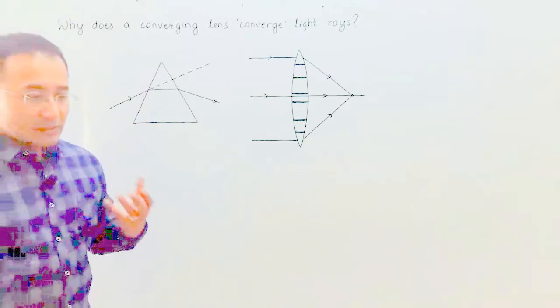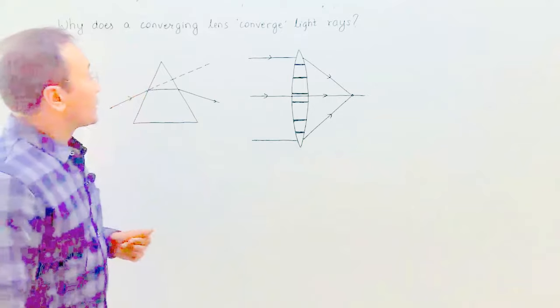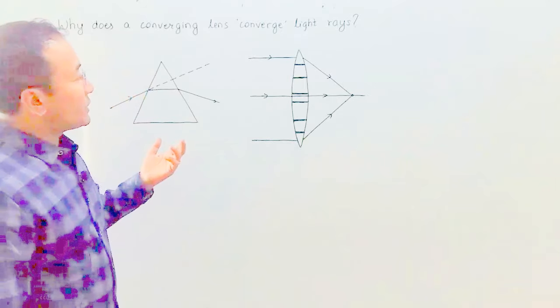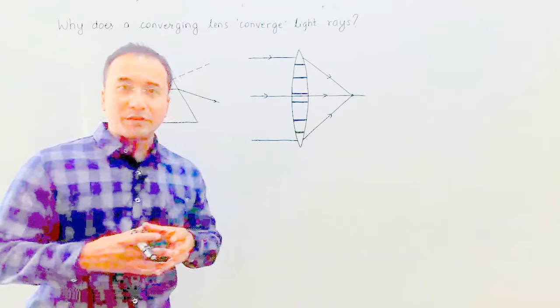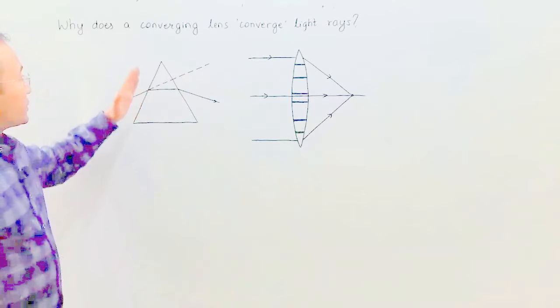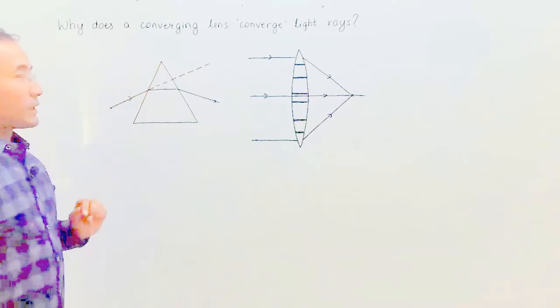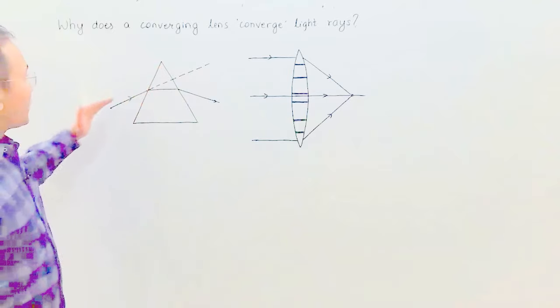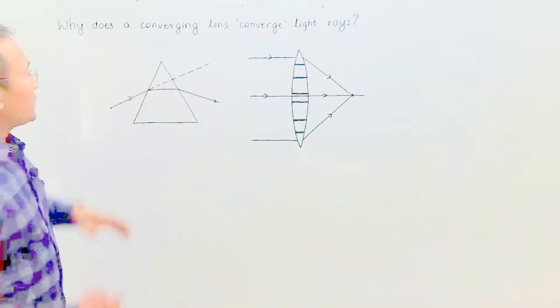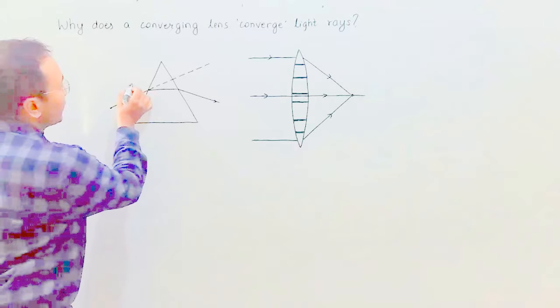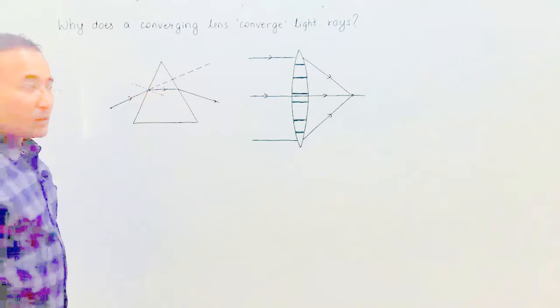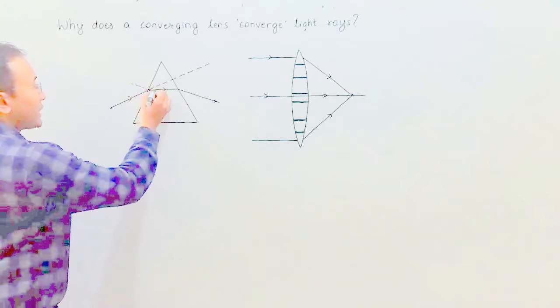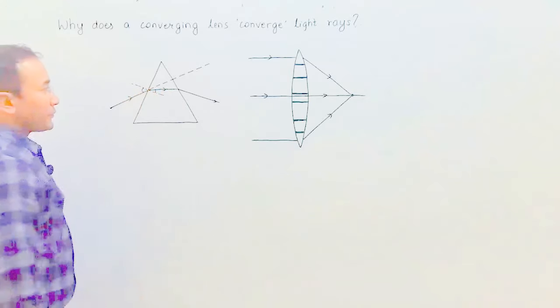That is the issue we have today. Before understanding the converging lens, we have to understand the action of a prism. A prism has two non-parallel surfaces. When light rays come here, it is deviated towards the normal. If this is the normal, this light ray has deviated towards the normal, which we can see from this angle. This angle is less than this angle.